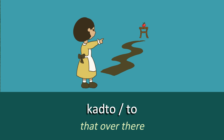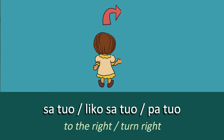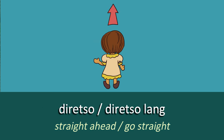Then we expand that slightly to 'That Over There', which is 'Kanto', or just say 'To' for short. So how do we say 'To the Left' or 'Turn Left'? Sa Wala, or Liko Sa Wala, or you can use Pawala — they all mean To the Left or Turn Left. And for 'To the Right' or 'Turn Right', we use 'Sa To'o', 'Liko Sa To'o', or just 'Patu'o'. To'o means Right.